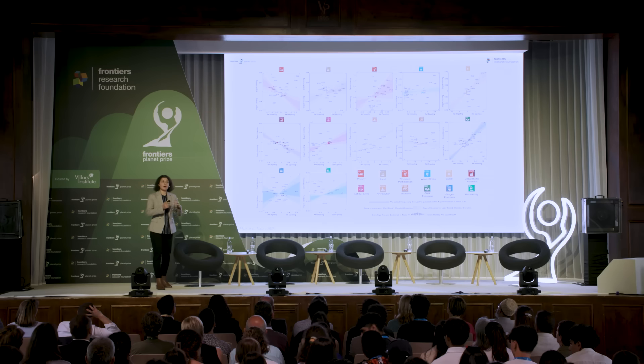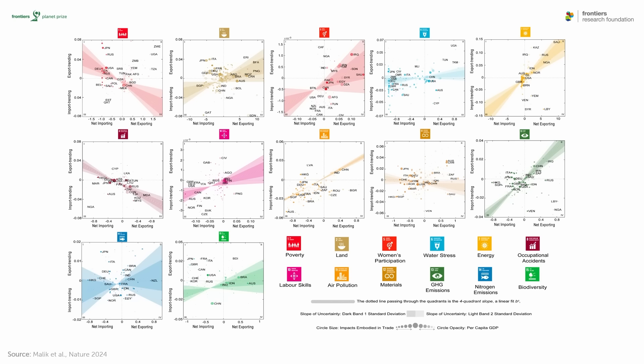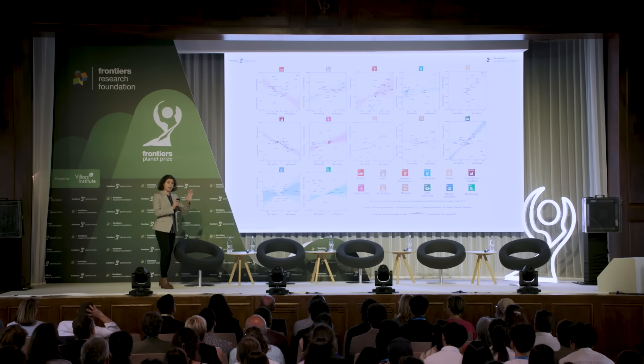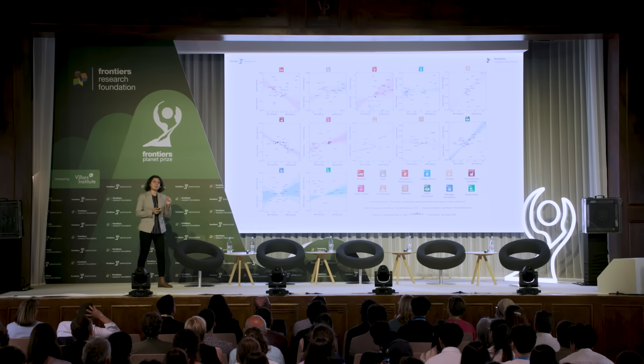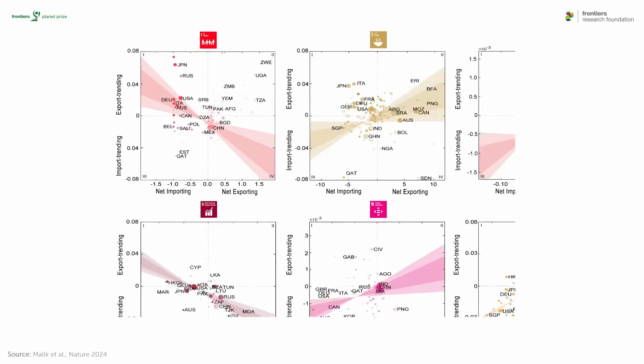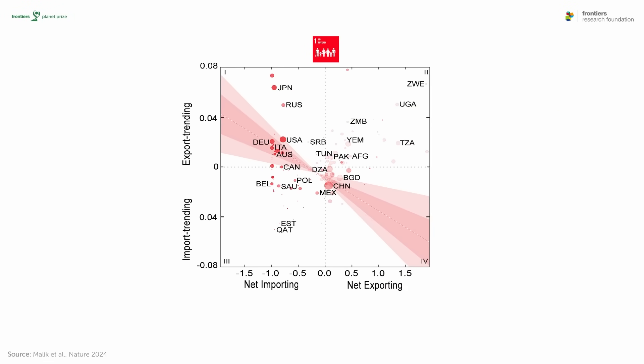The results were presented at a global scale, but we also aimed to categorize countries in terms of whether they are net exporters or net importers, and whether over time they are trending more towards net export or net import status. For each of the SDGs we were able to place countries in a four-quadrant diagram. Focusing on SDG 1 — no poverty — as one example: